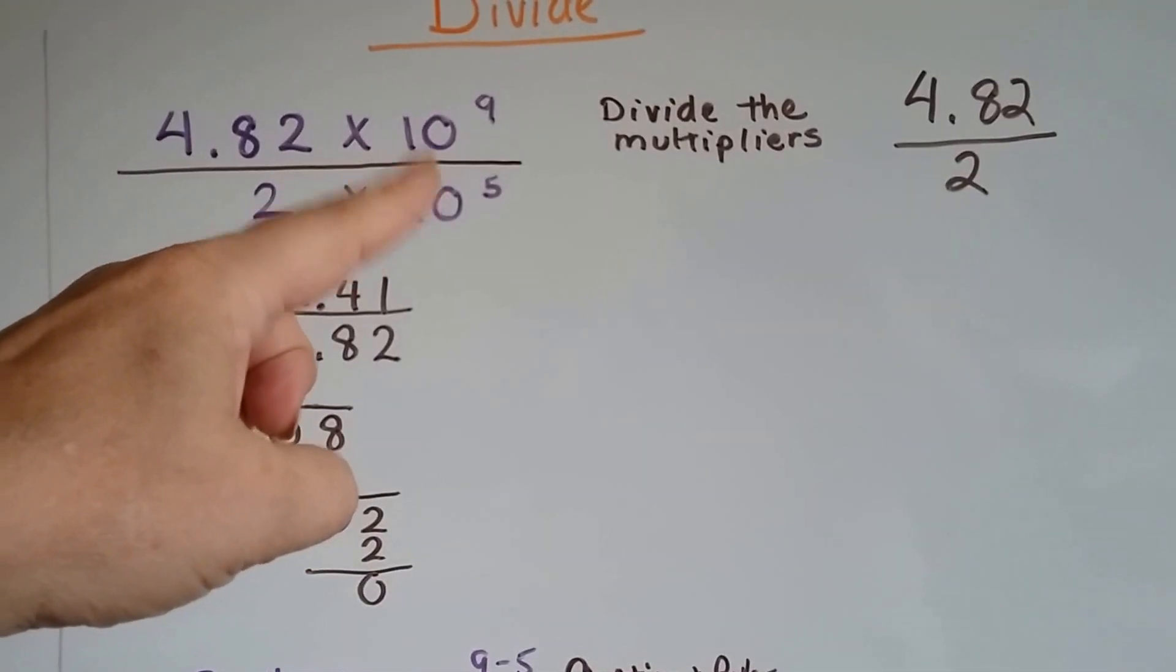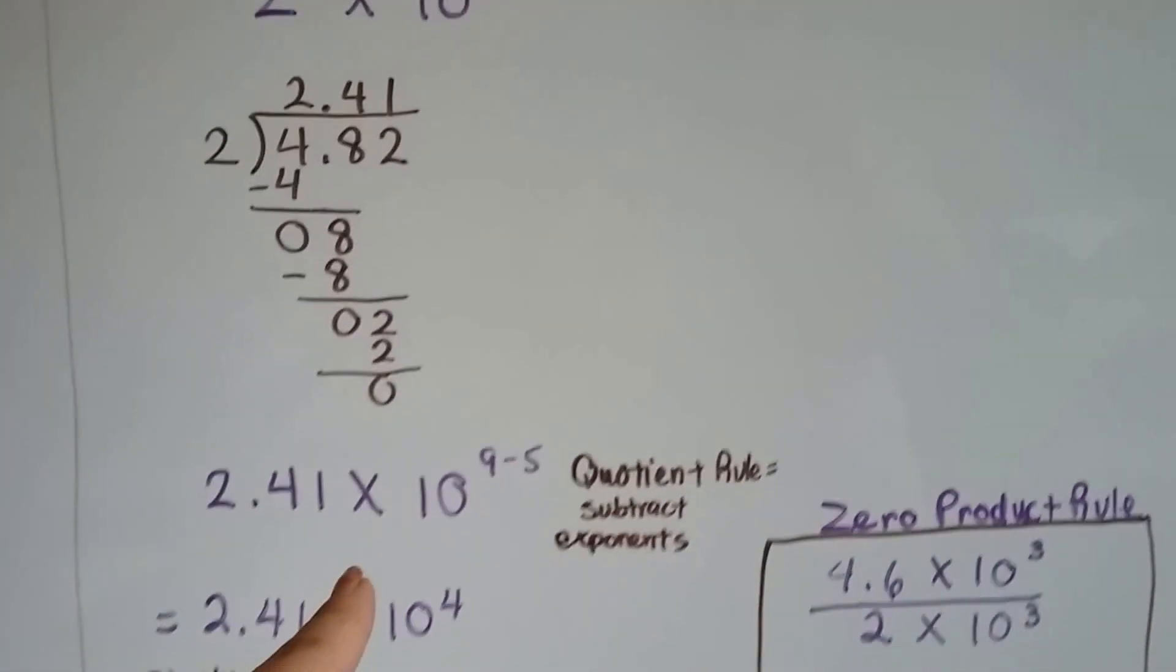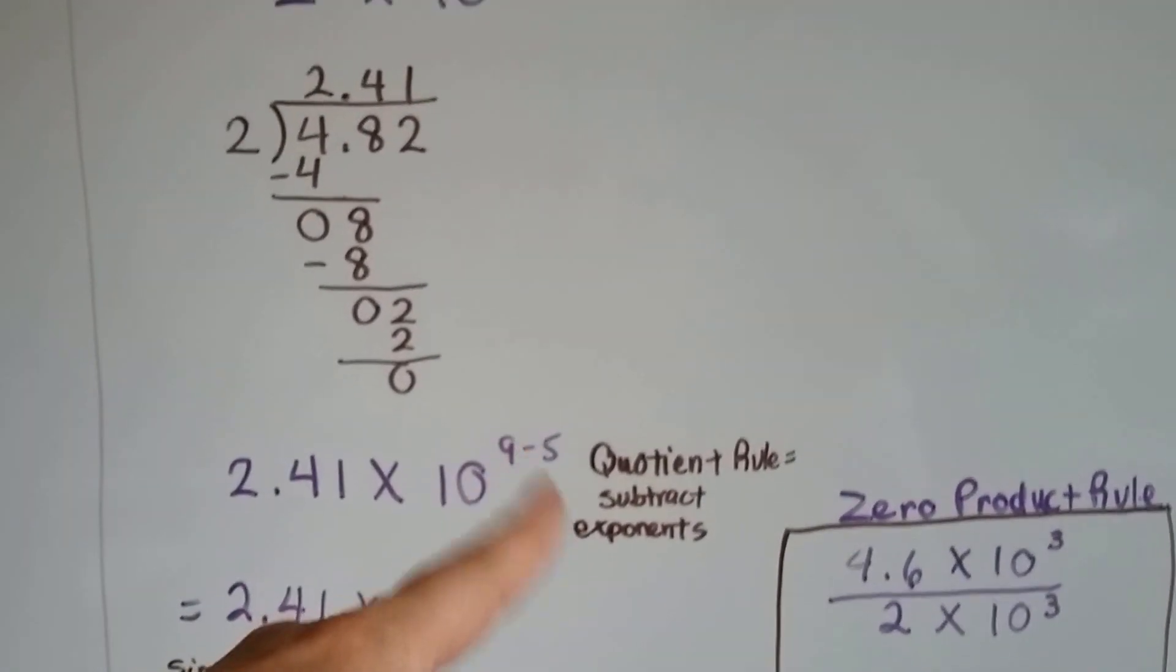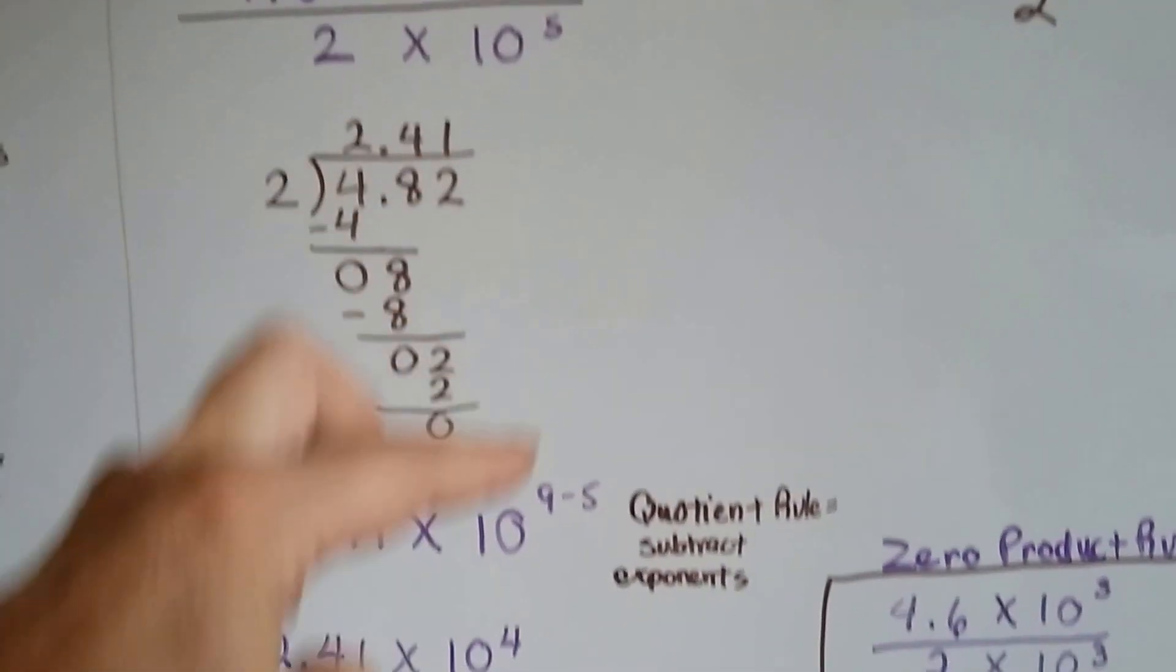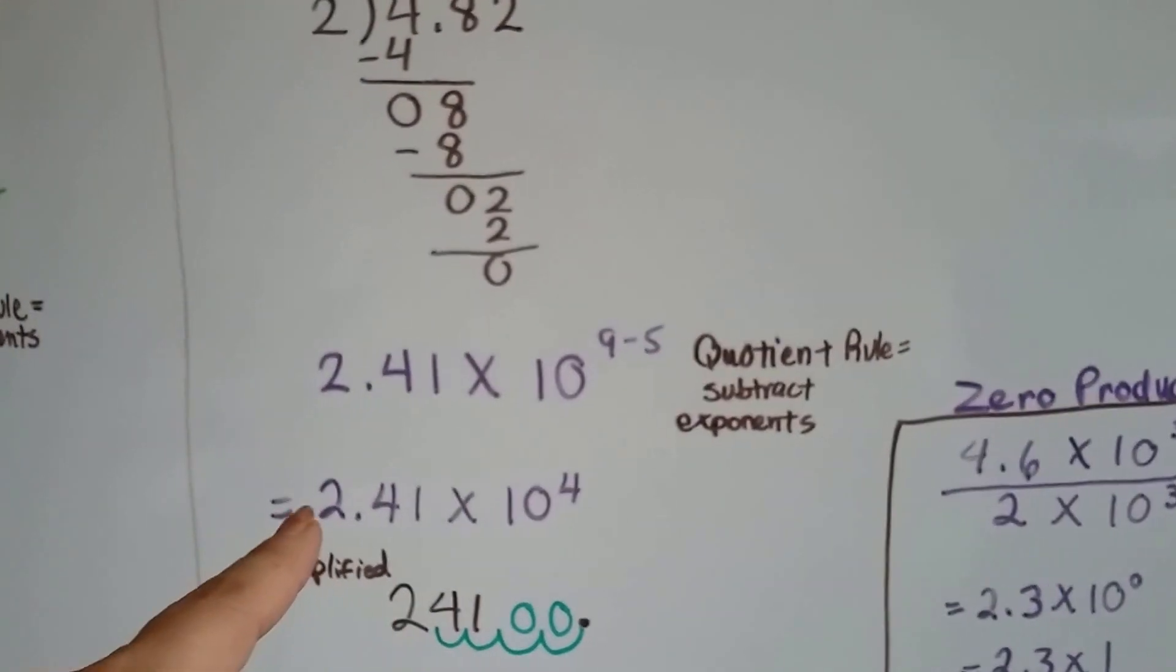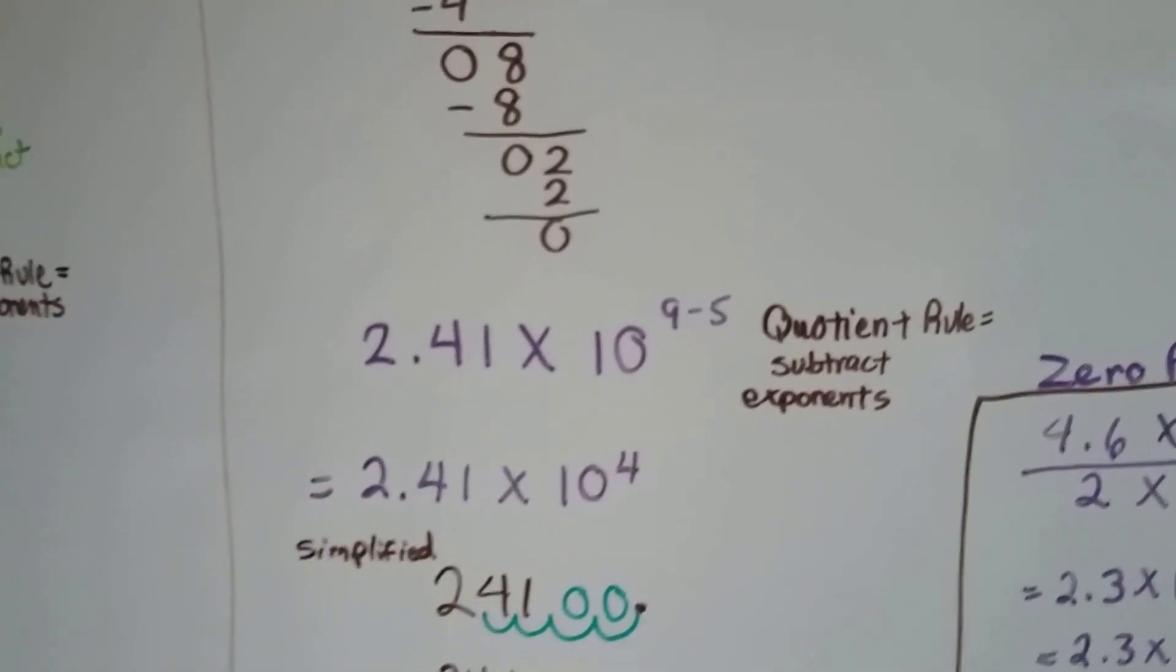Now, we deal with our exponents. The quotient rule says we subtract the exponents. We had a 9 and a 5. 9 take away 5 is 4. So, our answer is 2.41 times 10 to the 4th power.